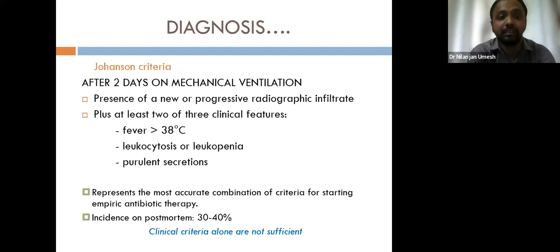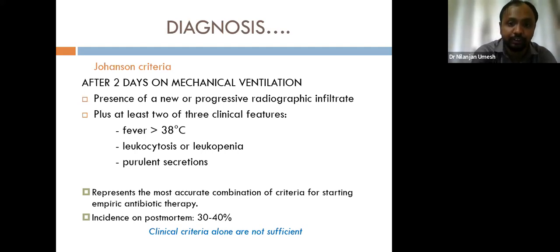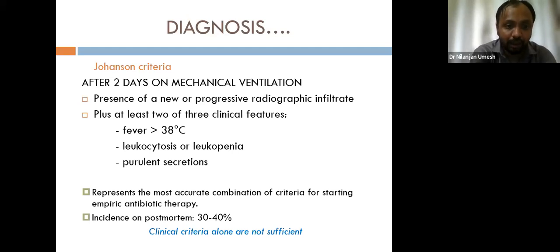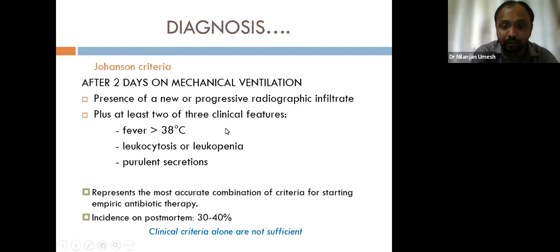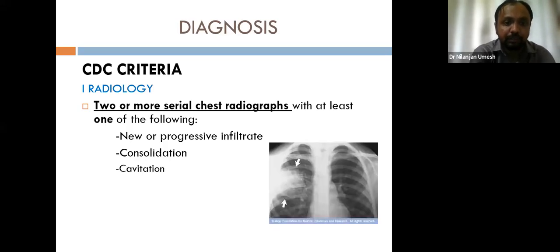Post-mortem data showed VAP was confirmed in 30 to 40 percent of suspected cases using the Johansson criteria, highlighting that clinical criteria alone are insufficient — radiological evidence is also required. The CDC criteria considers three aspects: radiology, with two or more serial chest X-rays showing new or progressive infiltrates, consolidation, or cavitation; signs and symptoms including fever, leukopenia, leukocytosis, or altered mental status in patients over 70 years.